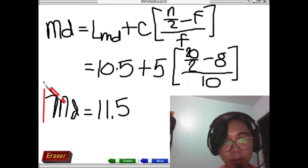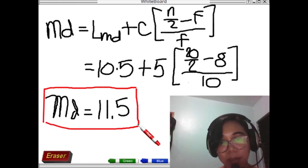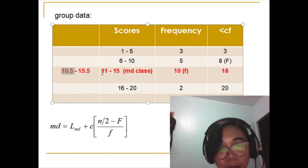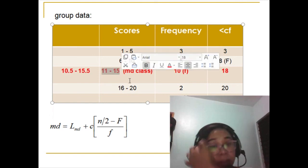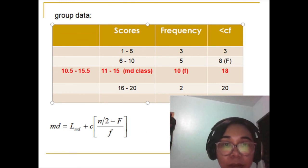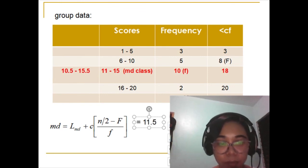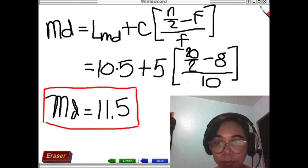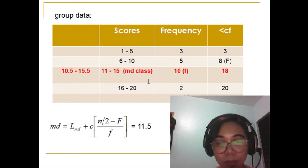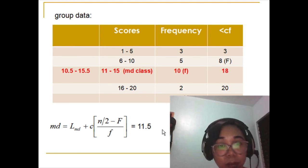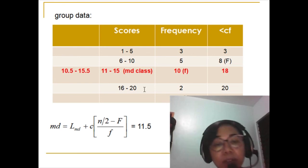We can also verify this value by checking whether it falls within the interval of the median class. If not, there is something wrong with the solution. Since 11.5 is within the range of 11 to 15, the median value is confirmed to be 11.5. To interpret this value: 50% of the students have scores below 11.5, and 50% of the students have scores above 11.5.